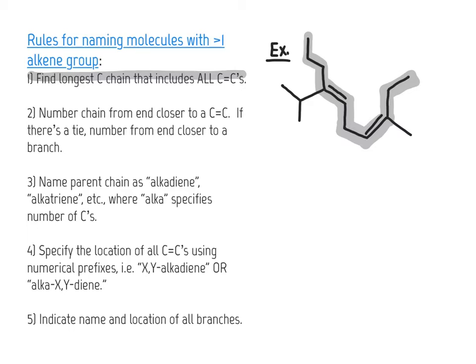Step two: number the chain from the end that starts closer to where the first alkene carbon appears. If there's a tie — meaning both alkene groups start at carbon two regardless of which end you number from — then number from the end closer to a branch. In this molecule we start numbering from the right side: 1, 2, 3, because that puts an alkene group at carbon 3. Starting from the left would put the first alkene group at carbon 4. Numbering all carbon atoms gives us a total of 10.